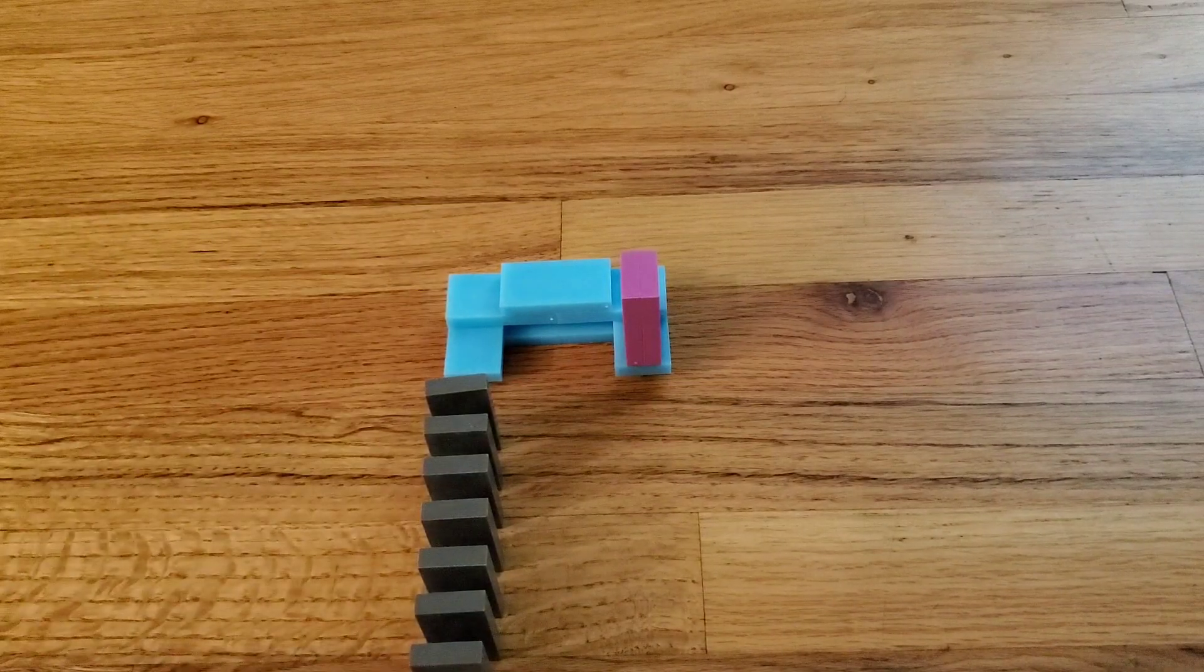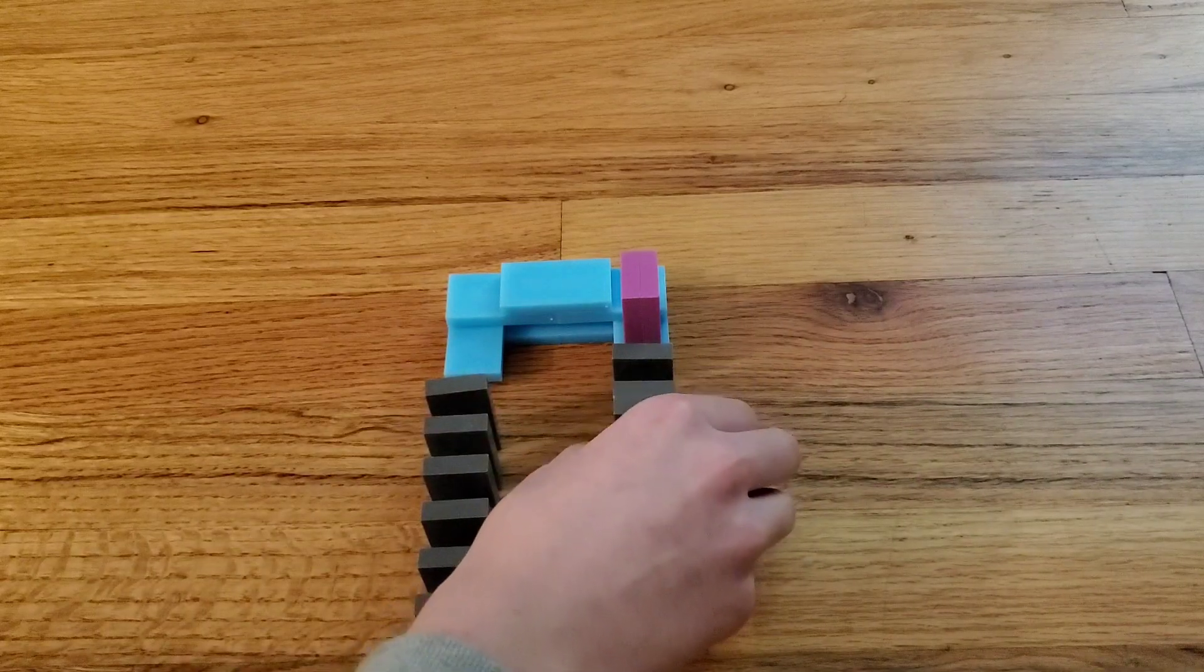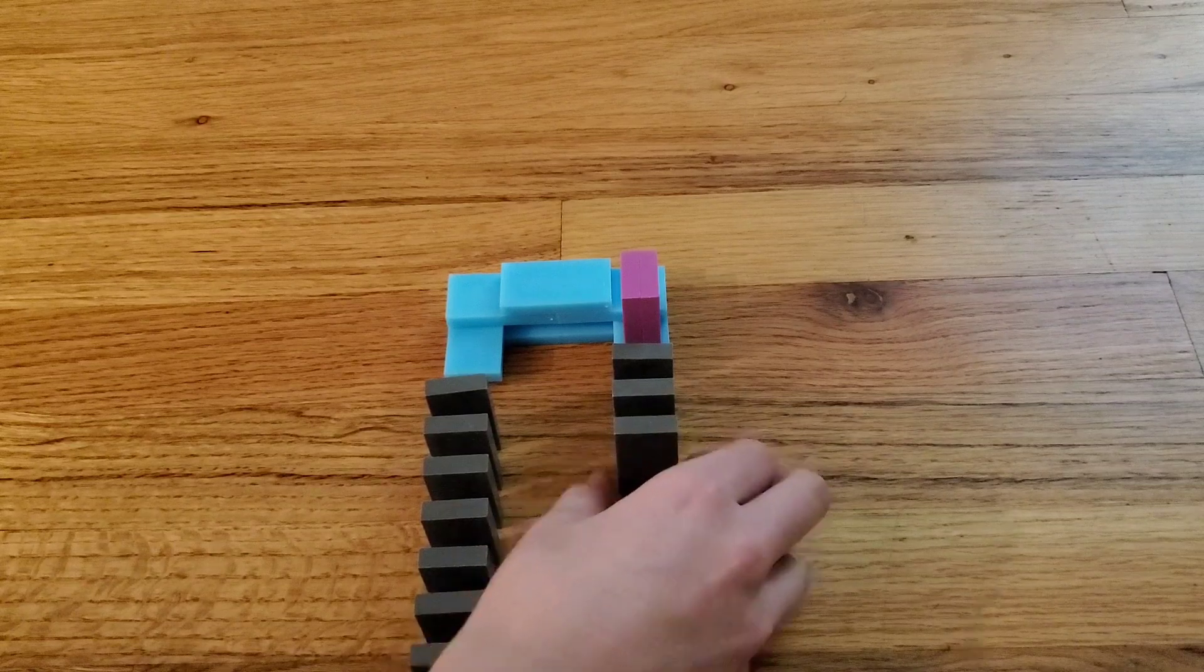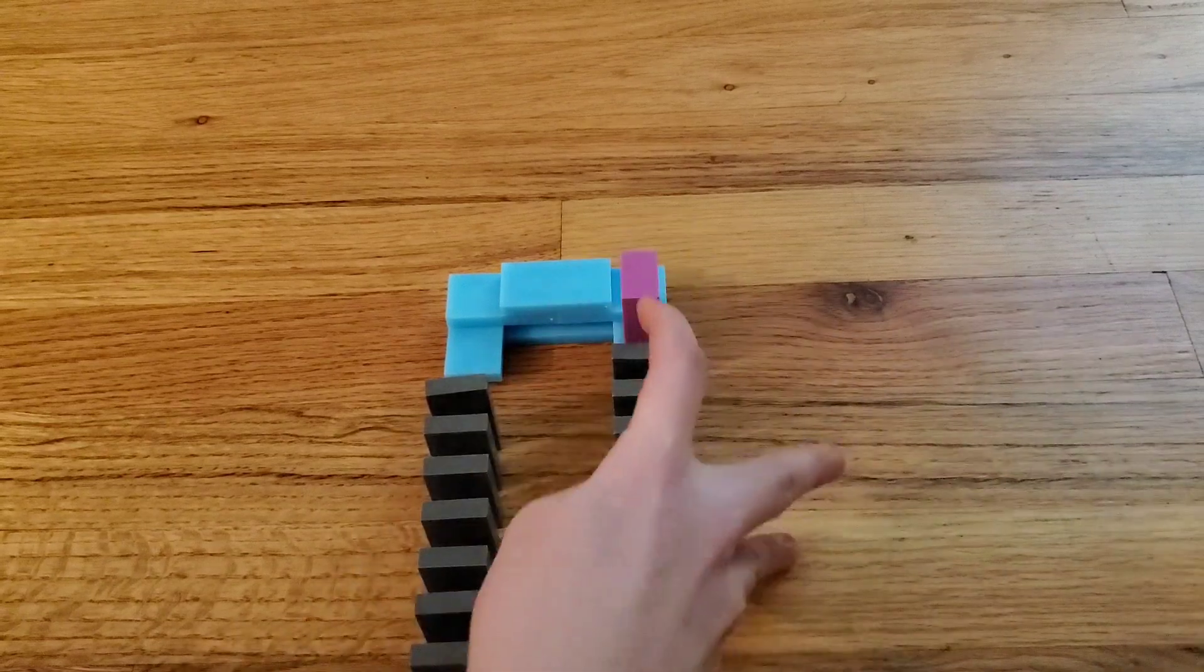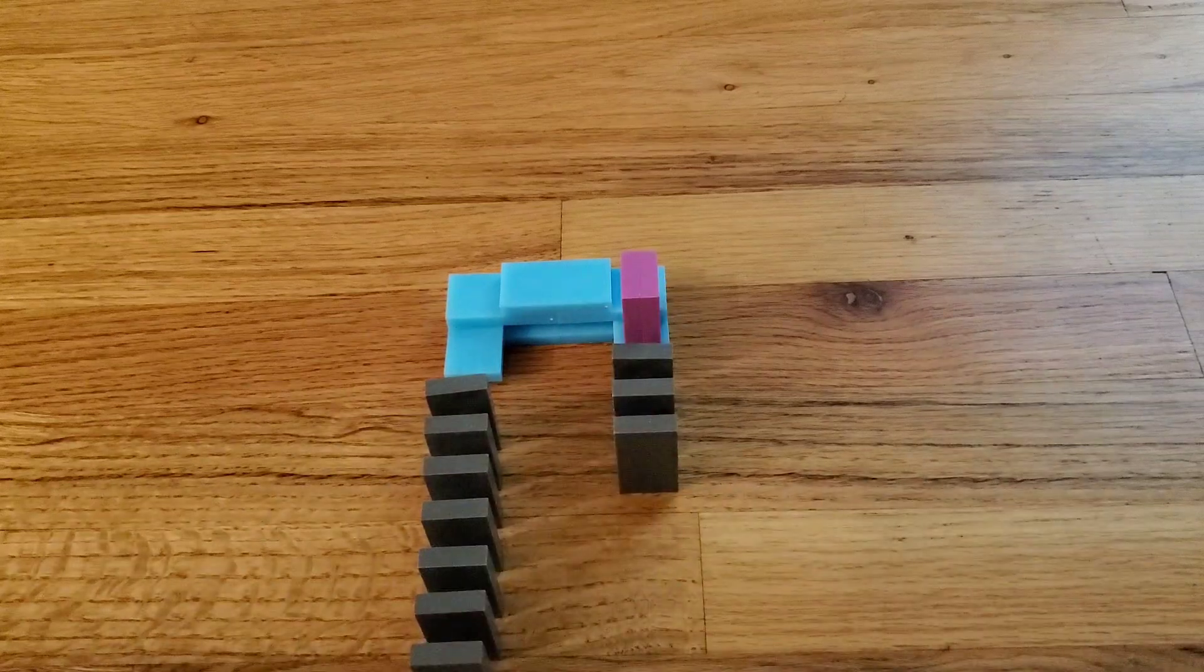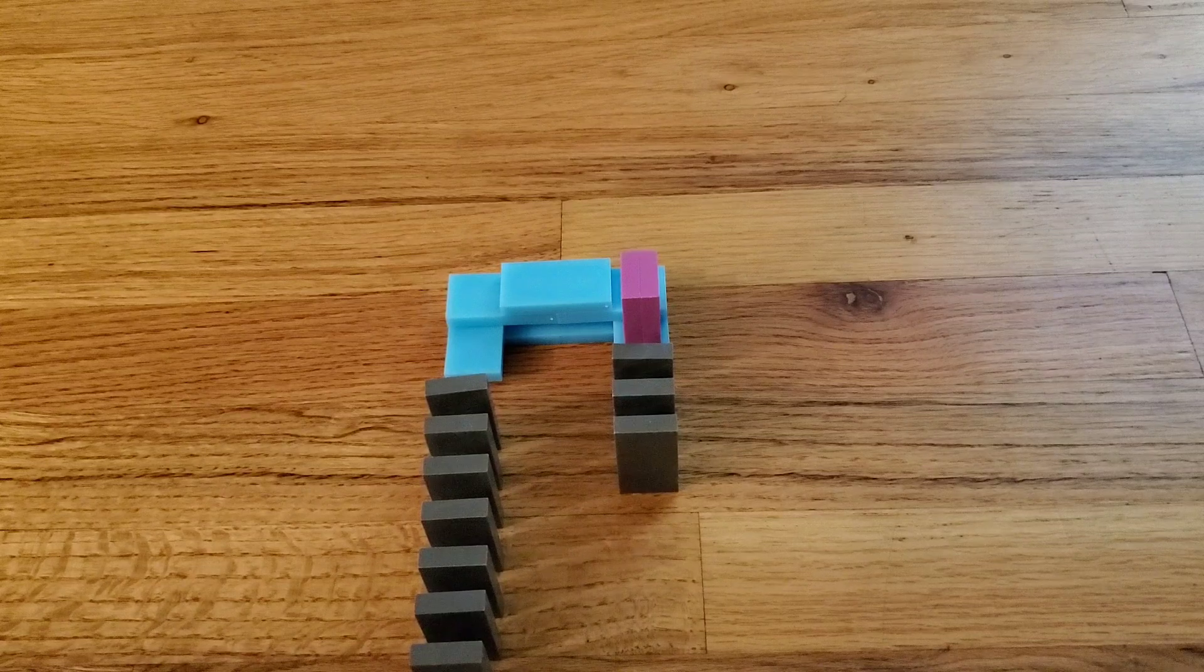Okay, then once you've done that, take some more gray dominoes and build a line leading away from the couch right in front of that right arm of the couch.